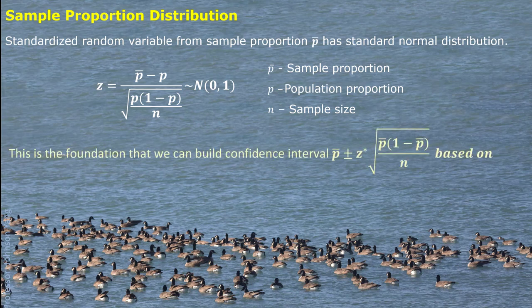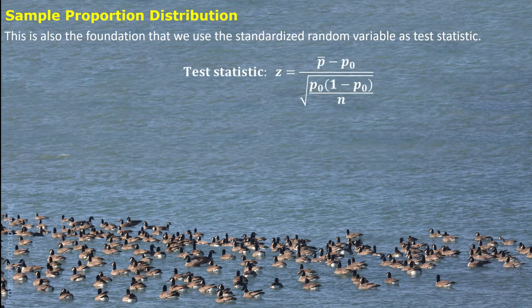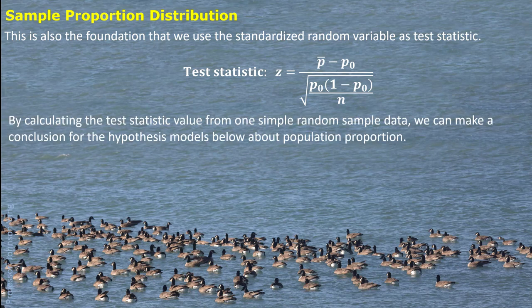Based on this, we can build up a confidence interval with sample proportion as the center, and the margin of error comes from the z critical value multiplied by the standard deviation of the random variable p-bar. When the confidence level 1 minus alpha is preset, we can easily find the z critical value using an Excel function. We can use this test statistic by calculating its value from one random simple sample data to make a conclusion for the hypothesis about the population proportion — either two-tailed or one-tailed.